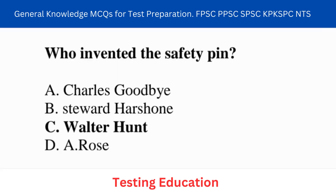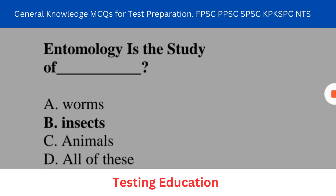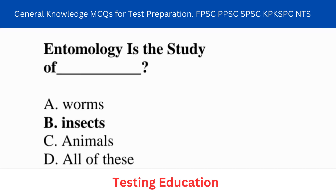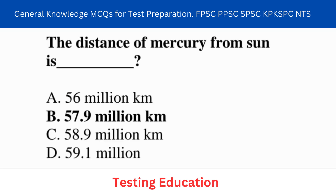Next question: who invented the safety pin? Answer: Walter Hunt. Next question: entomology is the study of insects. Next question: how many bones are in our body? Answer: 206.